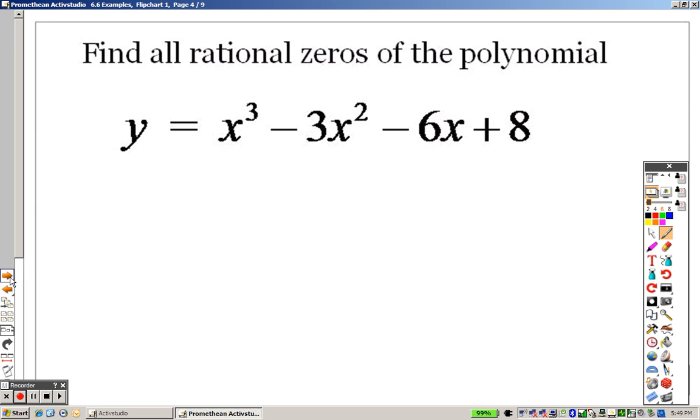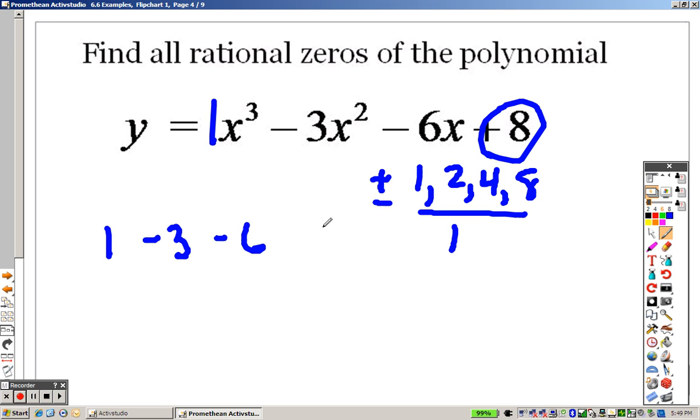So let's take a look here at the next one. With this one, we have the 8 at the end. So all the numbers that are divisible by 8 is 1, 2, 4, and 8. So that's not too many. The coefficient is a 1. So really, I just have a 1. So really, I have plus or minus 1, plus or minus 2, plus or minus 4, and plus or minus 8. That's really all I have there. So not too many to look over. So when I write this down, I have a 1, a negative 3, a negative 6, and a positive 8.